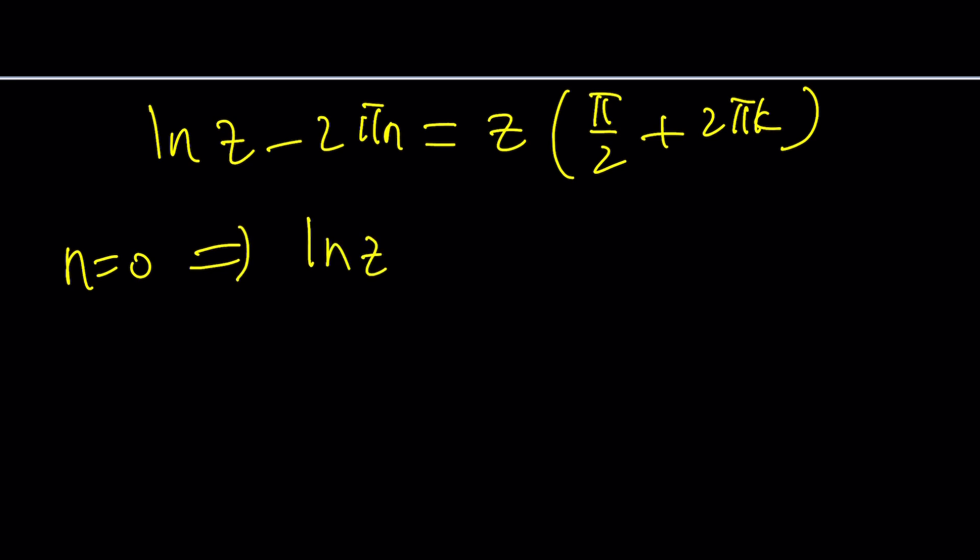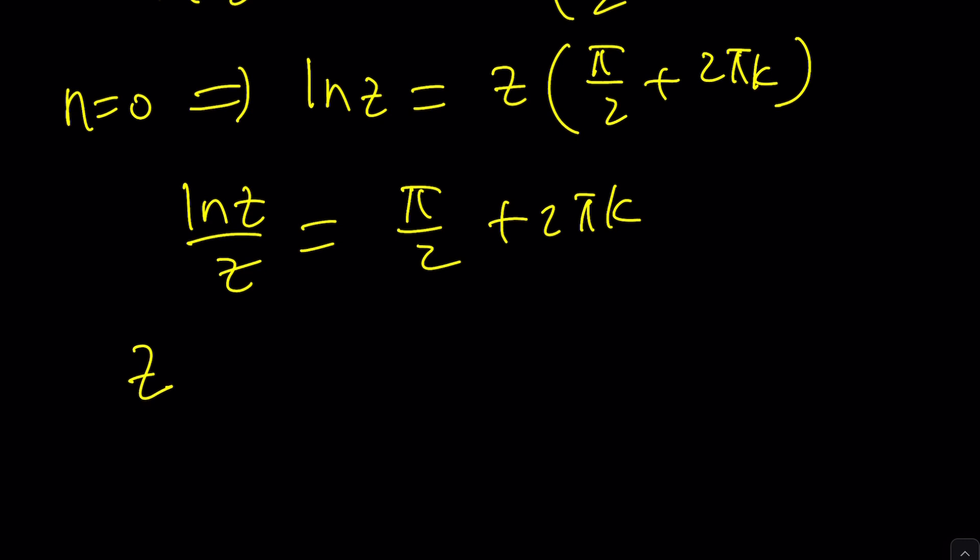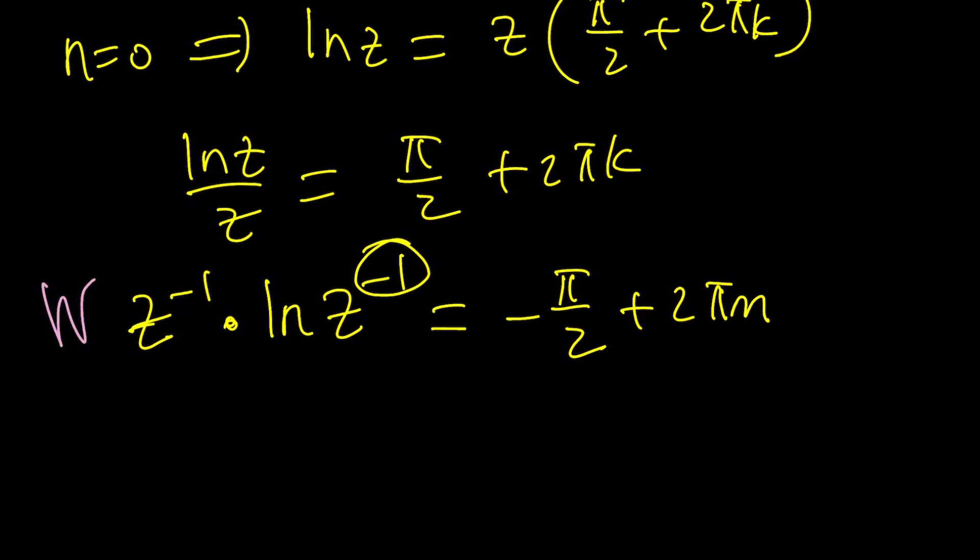If n is 0, then we get ln z equals z times pi over 2 plus 2 pi k. And then from here, we can kind of put these two together. ln z over z or z over ln z. Z over ln z. ln z over z is probably better. I'm going to write it like this. And then kind of write this as z to the power negative 1 times ln z to the power negative 1. I want to multiply both sides by negative 1 because that's what the coefficient is going to be. This will give us negative pi over 2 minus 2 pi k, but that's basically the same as 2 pi m because negative k is also an integer. And then I can apply Lambert's w function on both sides and that'll do the trick.